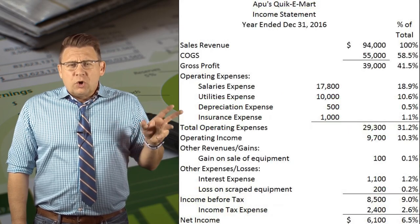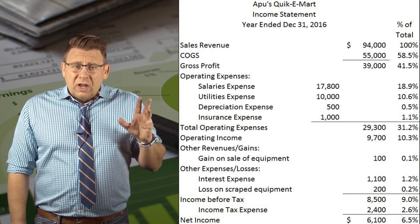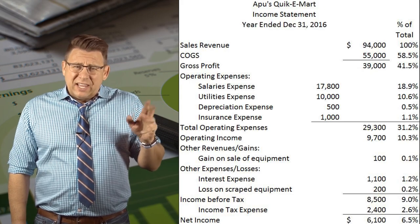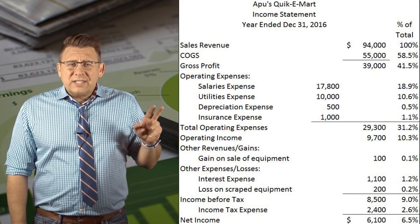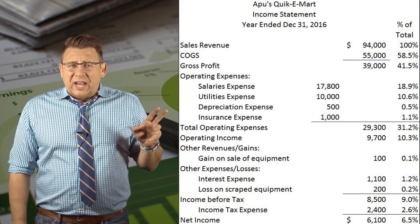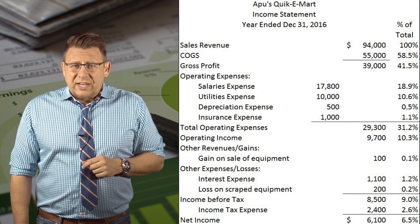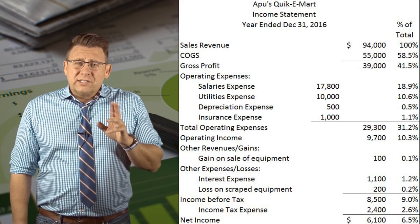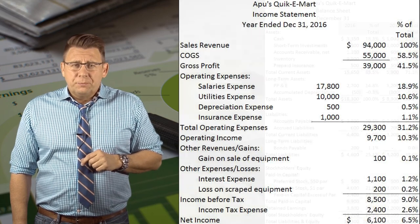Here's a more comprehensive example of Apu's Quickie Mart's income statement. Notice how each item is less than 100% because no amount is larger than net sales revenue.